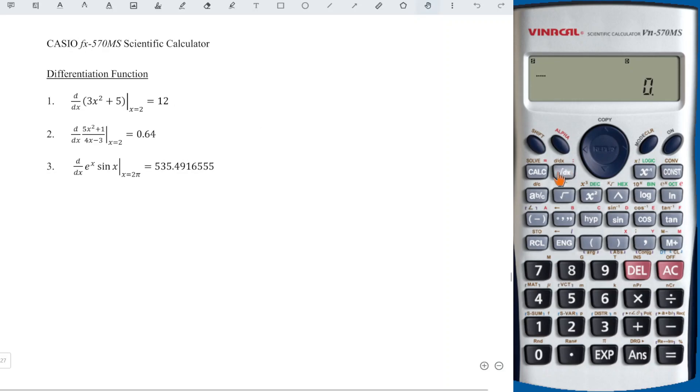First, we press Shift to obtain differentiate, followed by the function. To obtain x, press alphabet and the button containing x square plus 5. For the given point, press comma and the value 2. Press equal, we will obtain the correct value as we can see here.